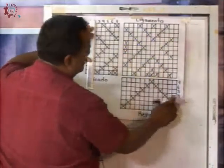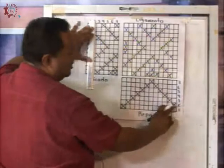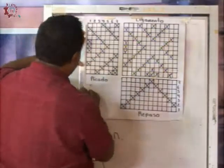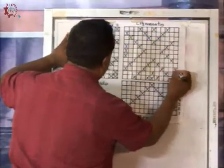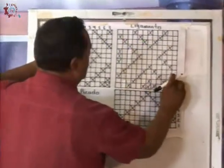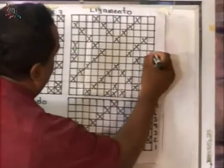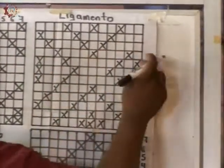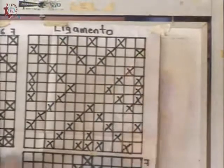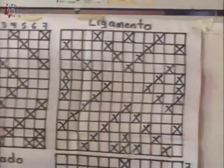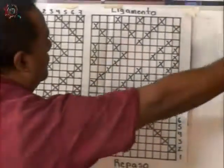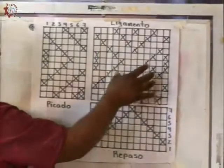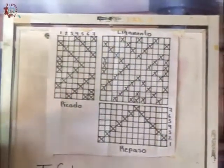Y por último, el dos — esta tachita me indica que es el hilo dos, que es el primero: dejo dos, tomo uno, dejo dos, tomo tres, dejo dos y tomo uno. Si yo voy repitiendo este repaso solo con estos siete hilos, voy a tener un diseño más grande y voy a obtener el diseño final del ligamento.